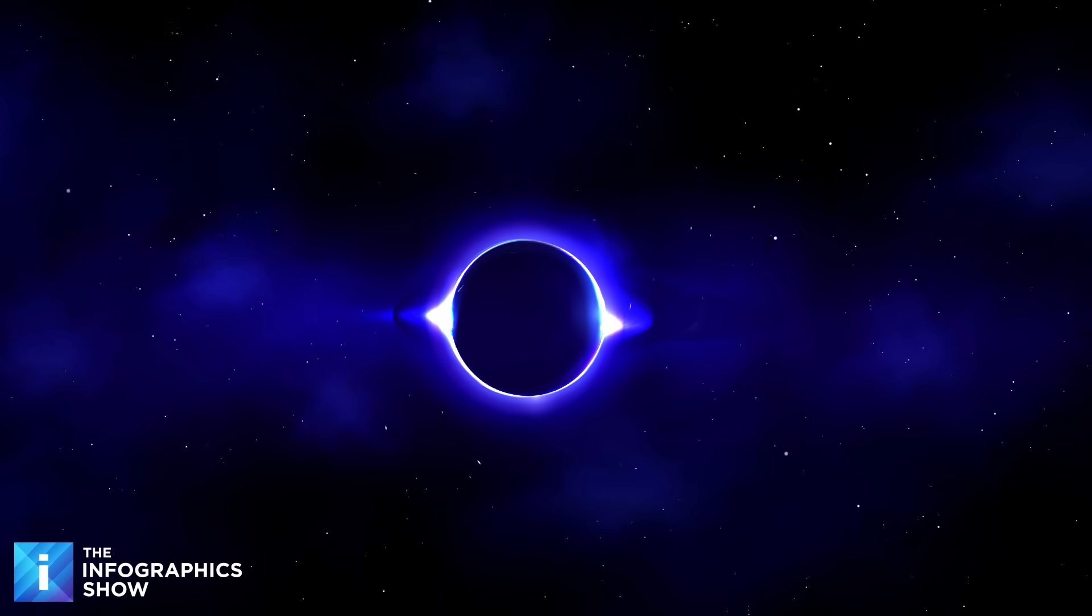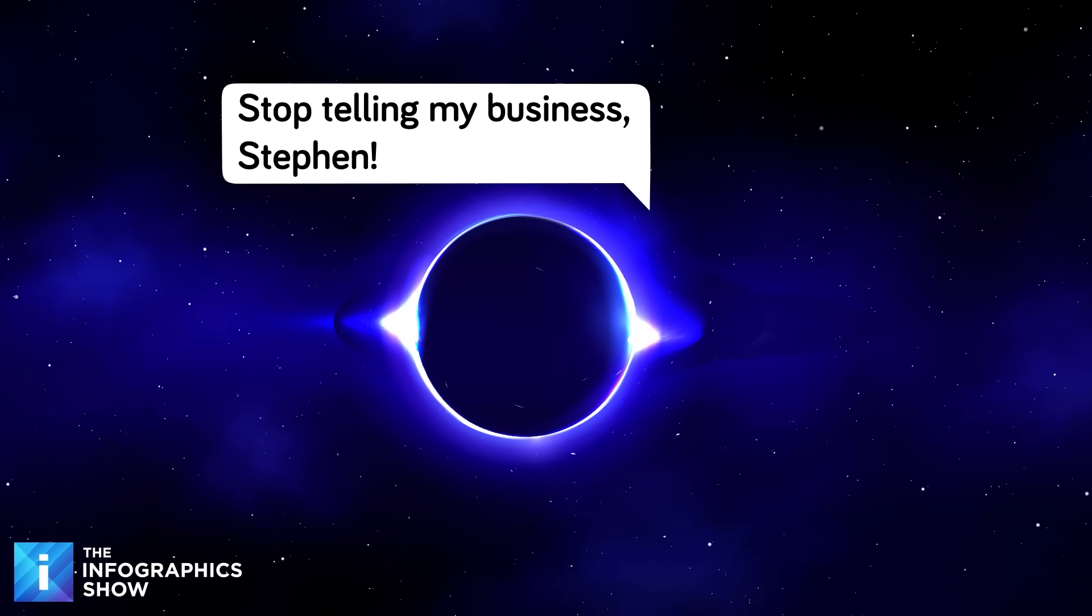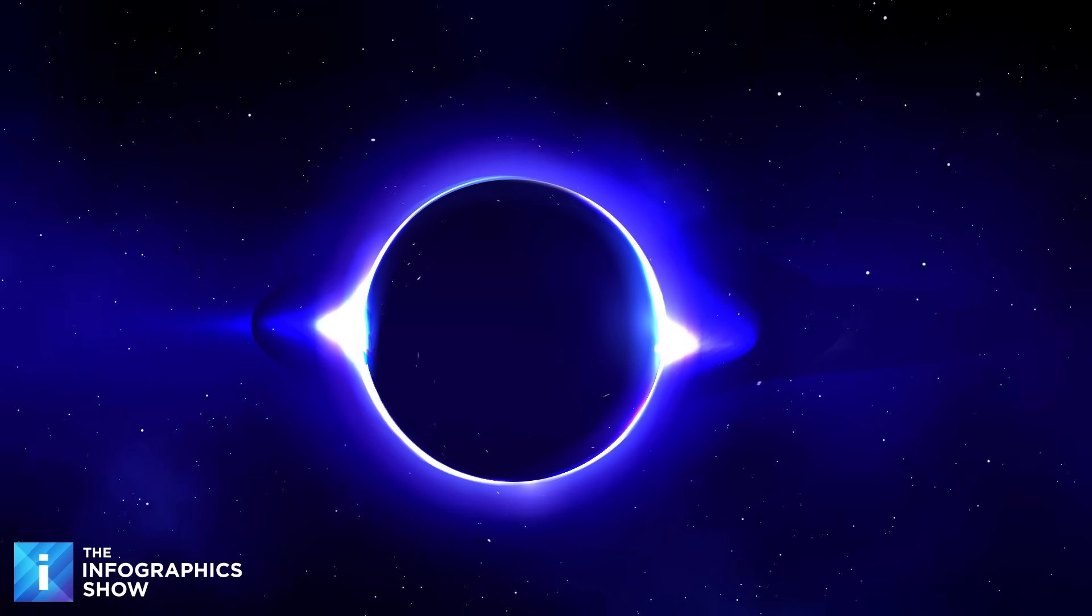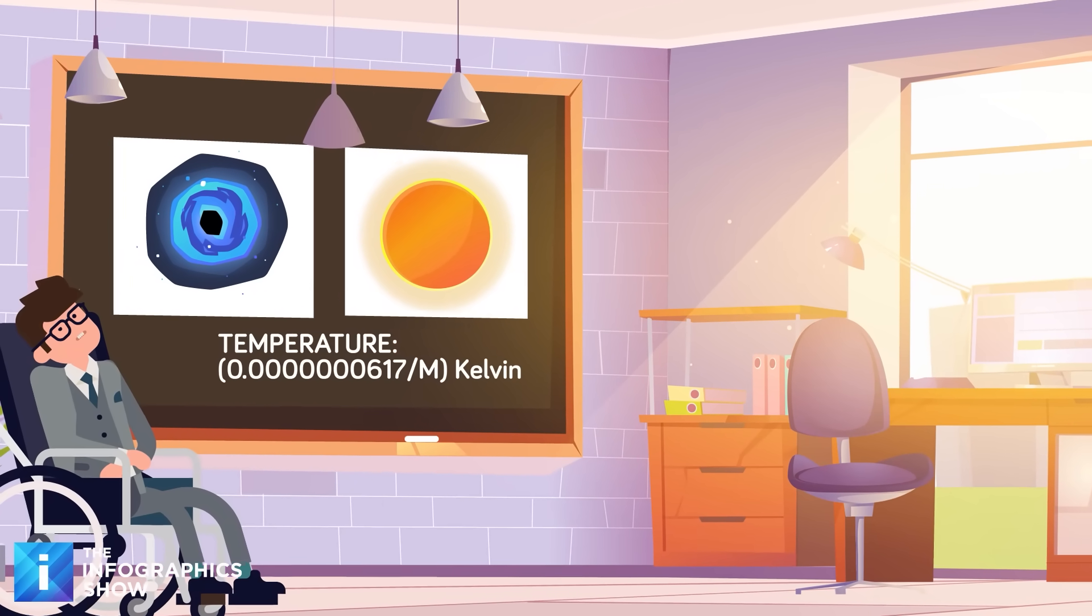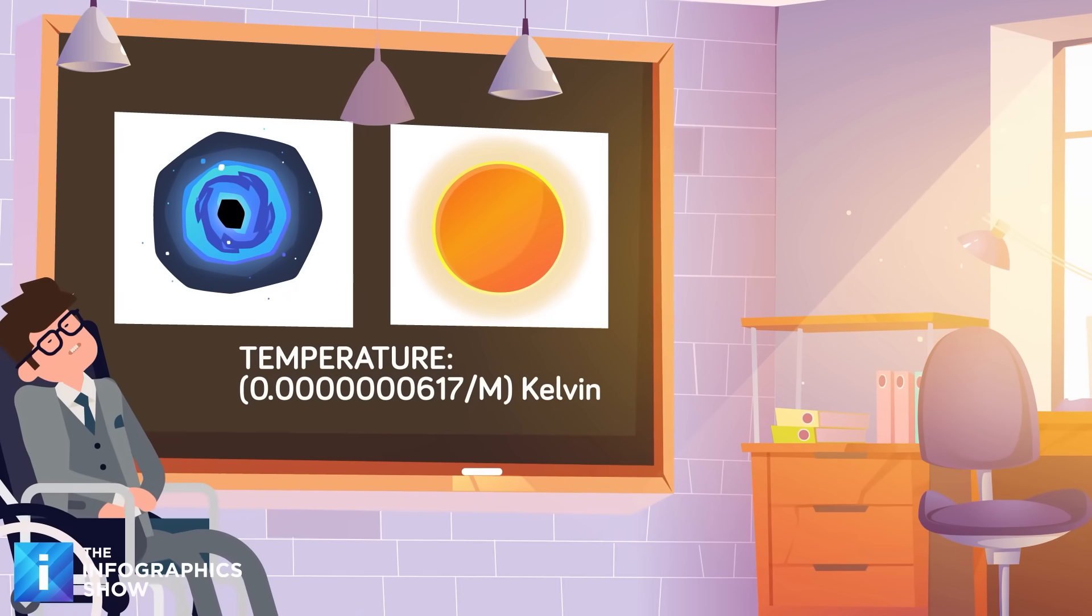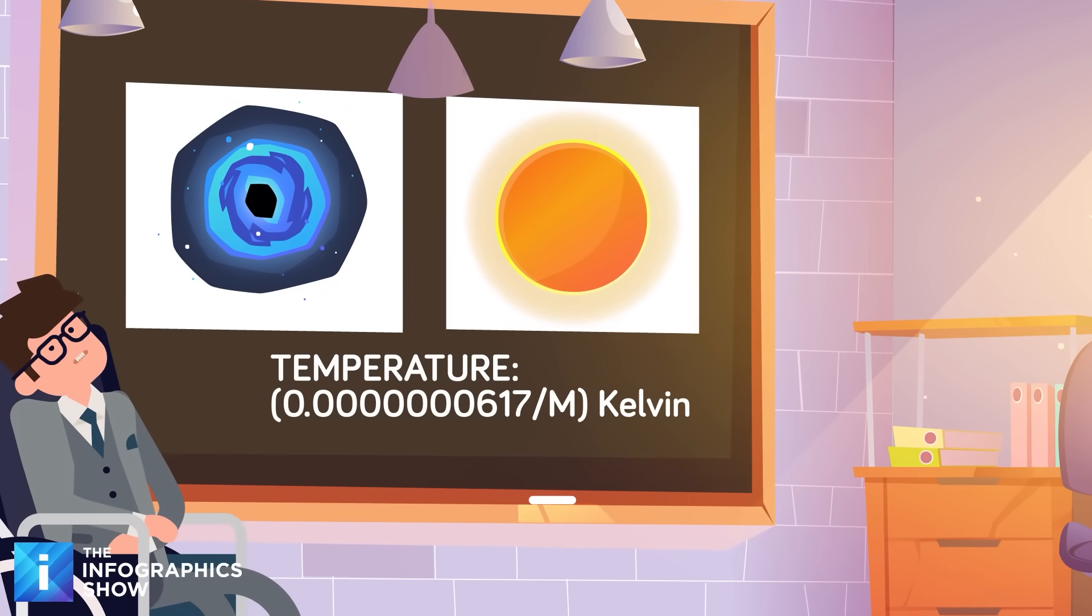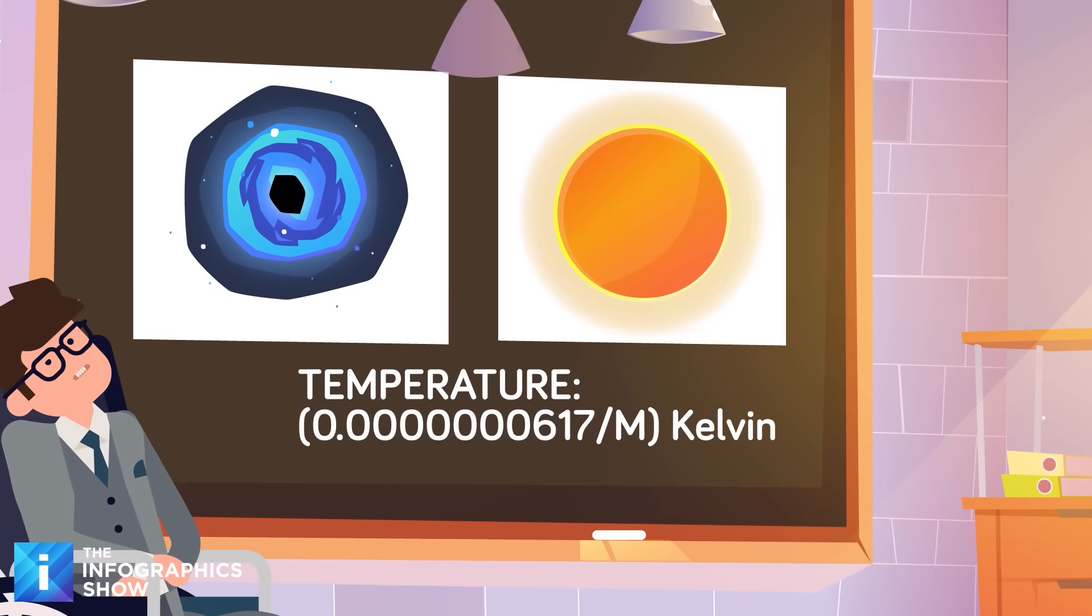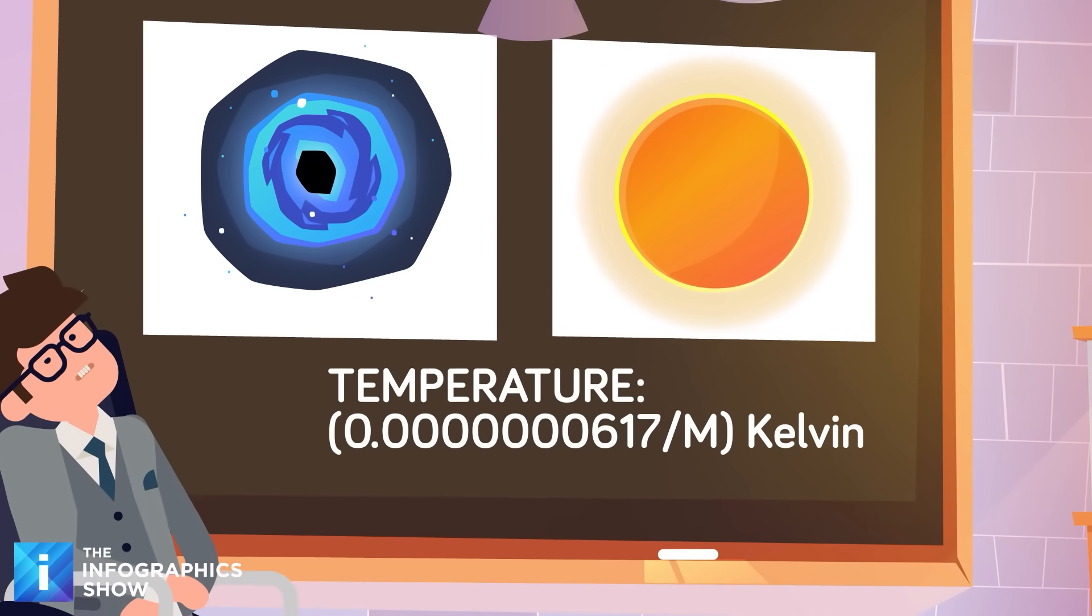Hawking's equation revealed something counterintuitive and deeply unsettling. Smaller black holes are actually hotter than larger ones, and hot objects evaporate faster than cool ones. A black hole with the mass of our sun has a temperature of about 60 billionths of a degree above absolute zero. That is colder than the microwave background radiation left over from the big bang. These black holes are so cold they are actually gaining mass by absorbing background radiation faster than they lose it through Hawking evaporation.